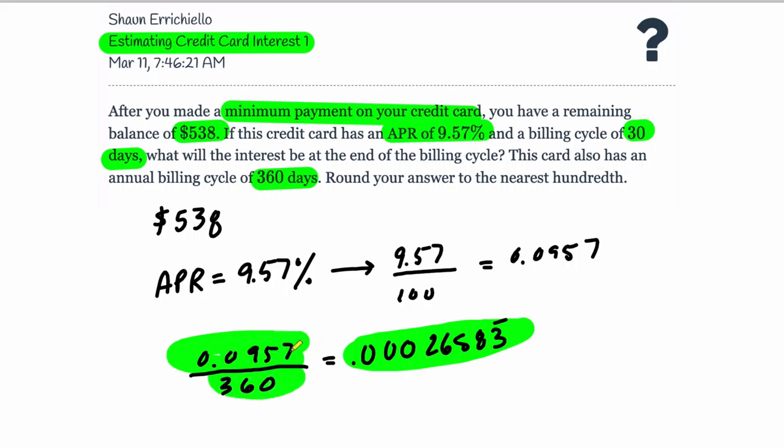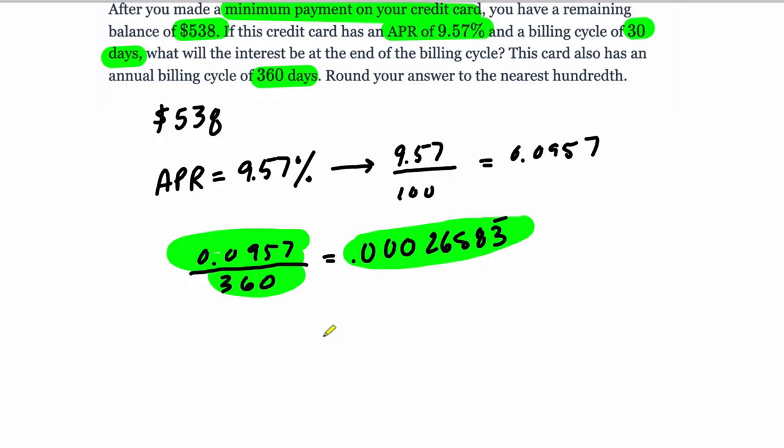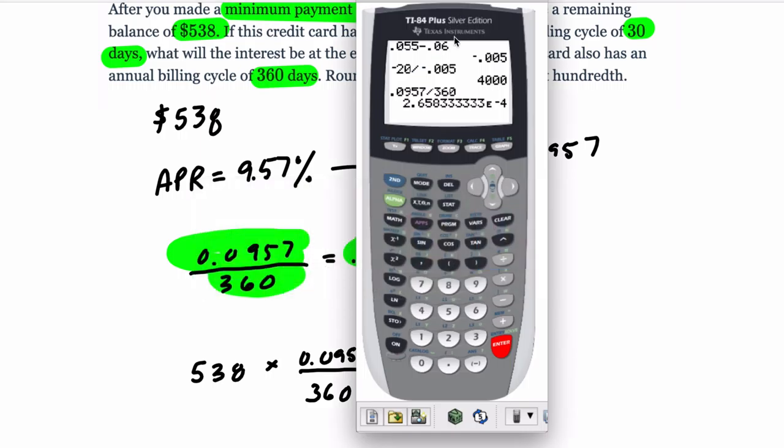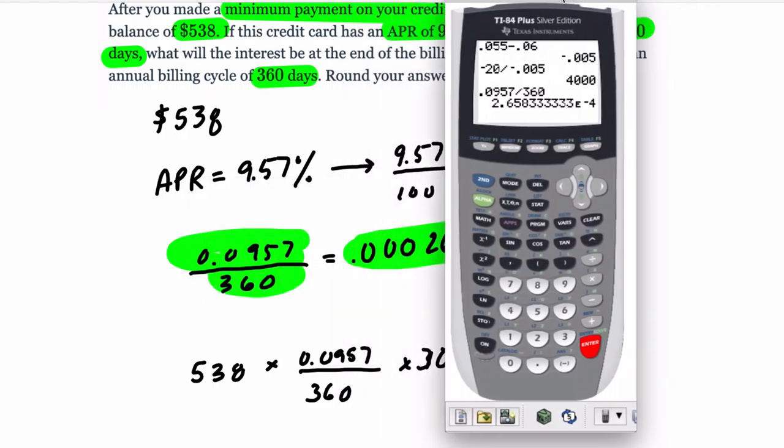We want to multiply it by the $538, the remaining balance of $538, times this fraction - I'm going to write the fraction out - times the number of days that we have left in our billing cycle, which is 30. That's going to give us our total interest over the period. It's an estimate really, but it gives us a really good estimation of the interest for the period.